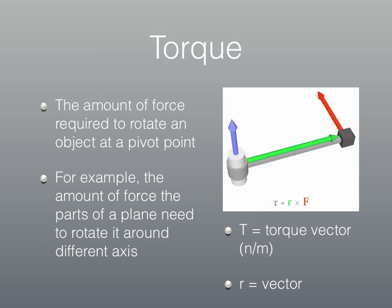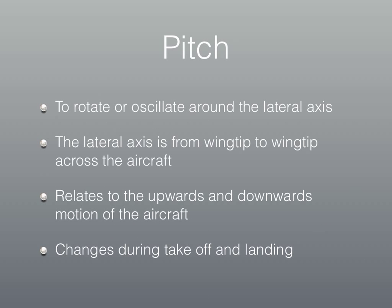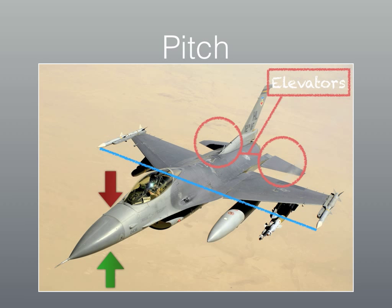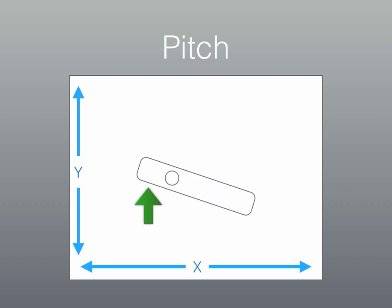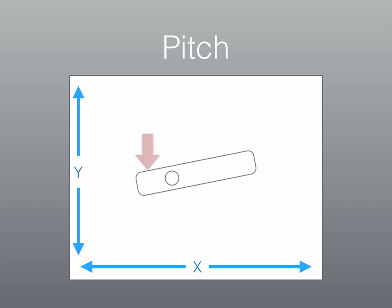This becomes relevant to an aircraft when we take a look at the aircraft principal axes of pitch, yaw, and roll. The pitch of a plane is the rotation or oscillation around the lateral axis, with the lateral axis being from wingtip to wingtip across the aircraft. This primarily affects upwards and downwards motion of the aircraft, in that the front of the plane goes up and the back of the plane goes down, or vice versa.